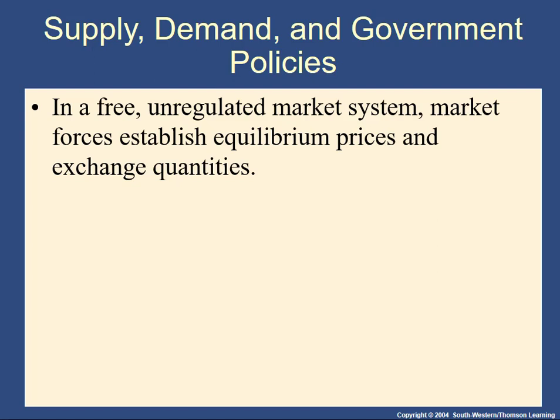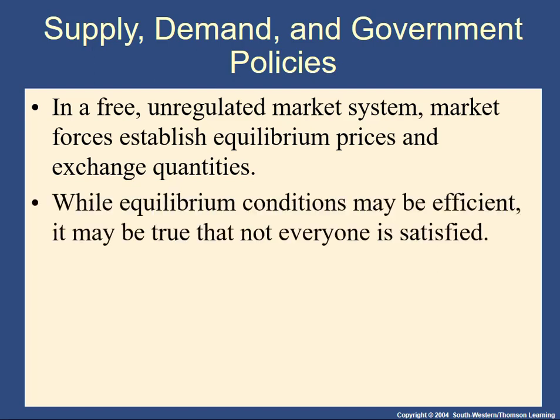In an unregulated market, in a free market — one where there's voluntary trade — that doesn't happen. The number of buyers and sellers match up at the equilibrium price, and these price control policies prevent that from happening. The question is, why do governments do that?